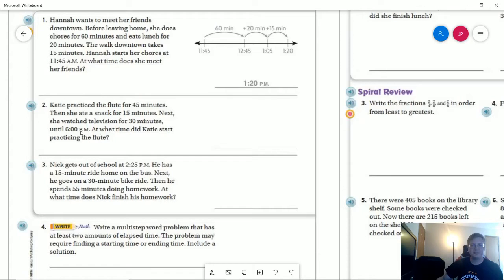Number two, we are starting with an end time of 6 p.m., and we are trying to count backward to figure out what time Katie started practicing the flute. So, to start with, what I would do personally is to add these two numbers together, which would give us 45 plus 15, which is 60, which takes us backward one hour. And then we can add our 30 minutes to that and count backward 30 minutes.